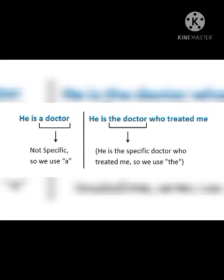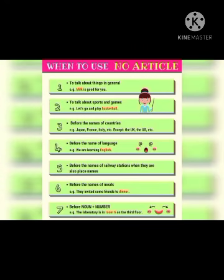Now let's look at rules for when you should NOT use articles. First, when talking about things in general — for example, 'Milk is good for you.' No article is used before 'milk' here. Second, when talking about sports and games — for example, 'Let's go and play basketball.' Basketball is a game, so no article is used.